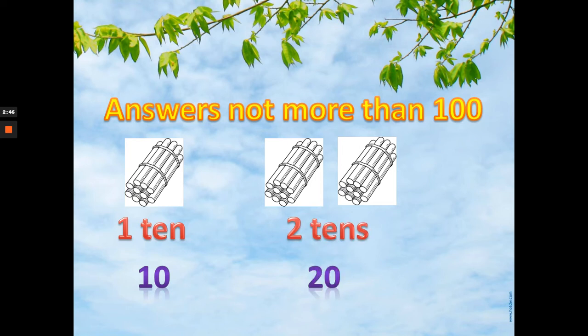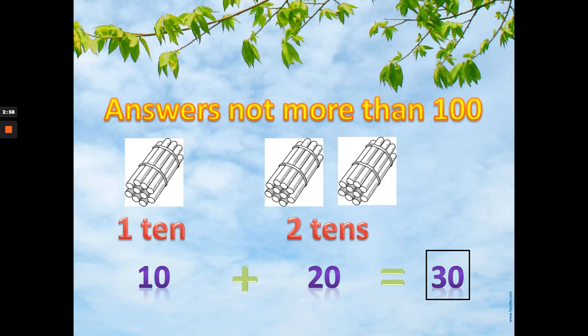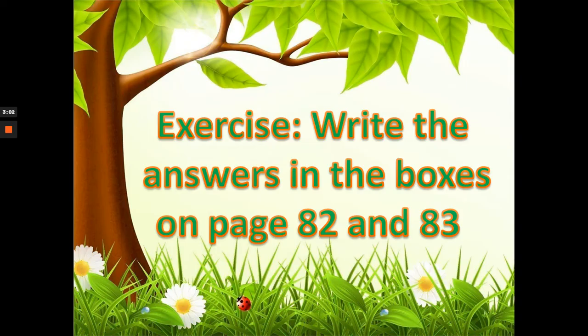Now we are ready to add. So 10 plus 20 equals — what's the answer? Yes, 30. Very easy, right? Let's see if you get this one. Let's go to our activity or exercise.